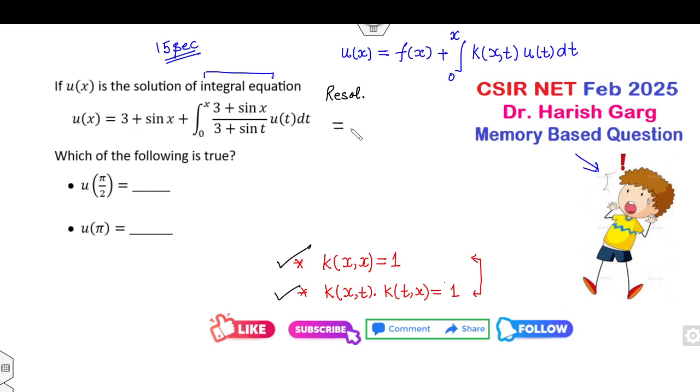Yes, you can find the resolvent kernel which is nothing but kernel divided by sine times e raised to power lambda times (x minus t). What is the lambda? There is a coefficient of this case. So lambda in this case is 1. Now once you know the resolvent kernel, what will be your solution?